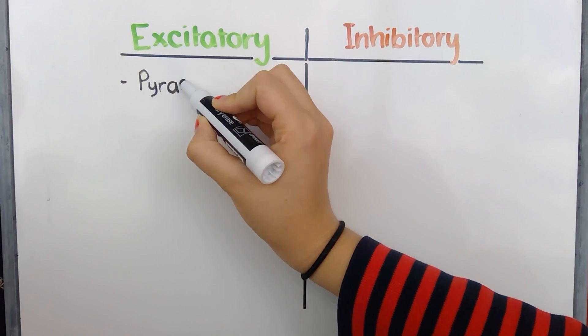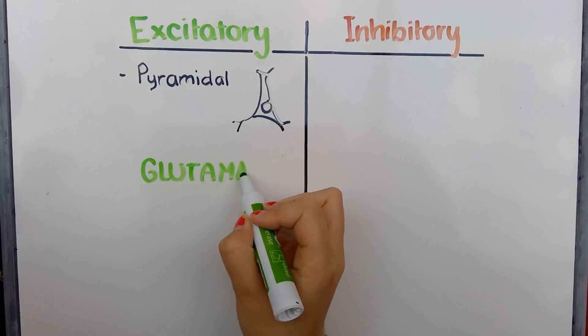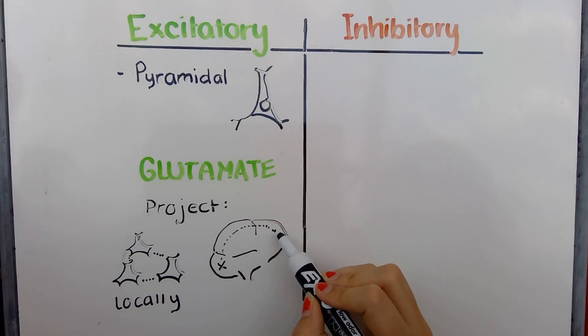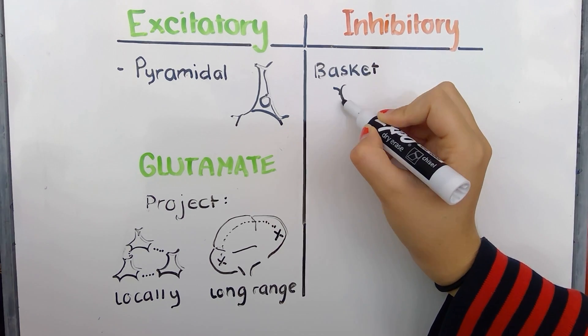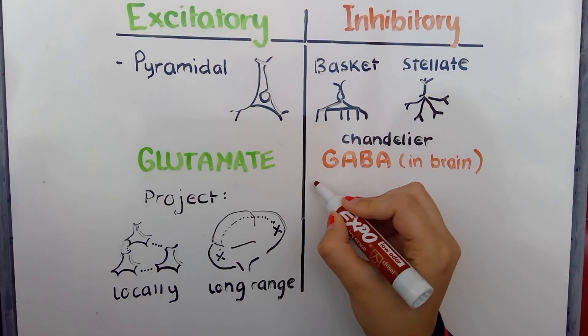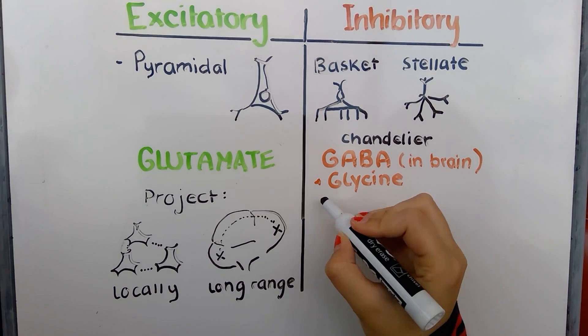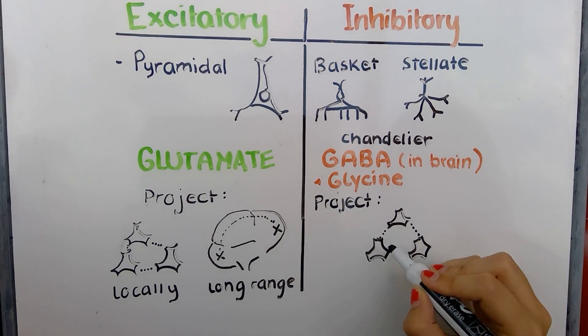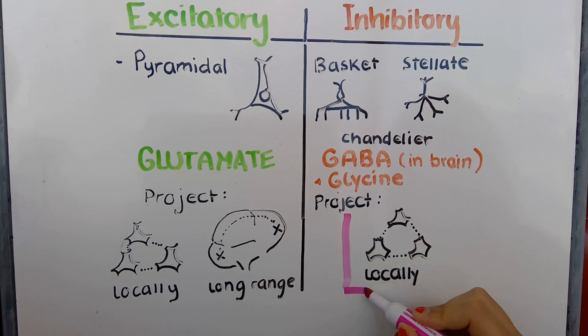There are two broad classes of neurons found in the adult nervous system: excitatory and inhibitory. There's no morphological difference between them, so these labels are assigned based on the neurotransmitters that can be synthesized and released from their axon terminals. The excitatory neurons of the cerebral cortex are pyramidal and employ predominantly glutamate. They project their axons either locally or long distances. Conversely, inhibitory neurons in the cerebral cortex release GABA in the brain and glycine in the rest of the body. There are three types in the cerebral cortex: stellate, basket, and chandelier. It's important to note that inhibitory cells project only locally. This will become relevant later when we discuss the origins of these cells in the developing nervous system. These cell types are important to distinguish as they originate in different regions of the neural tube and travel by different mechanisms.